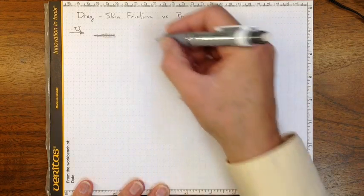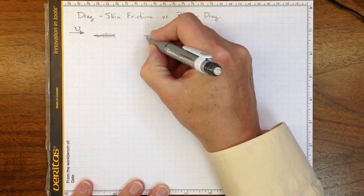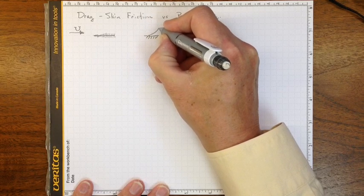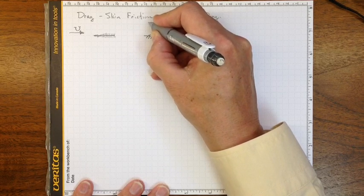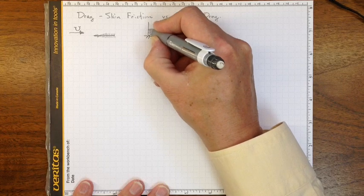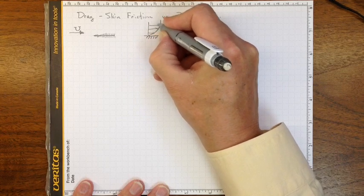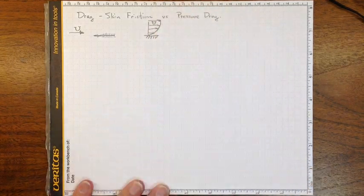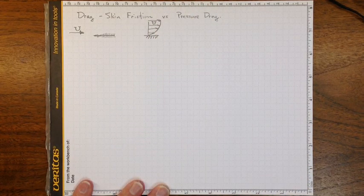and that's called the boundary layer. And if you zoom in, the velocity distribution on that surface will look something like this, zero down at the surface of the piece of plywood going up to a magnitude of capital U up here at the outside edge of the boundary layer.